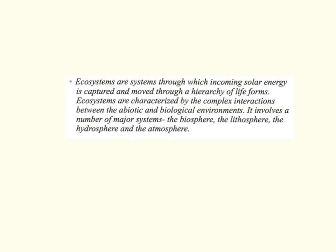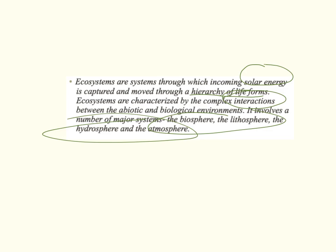There are many different definitions for ecosystems — there's not really a right or wrong one. This is a definition I've found which I really like, because it links very much with this dot point and with further dot points. It is a longer definition, but if you can know this definition for ecosystems, especially given the unit is ecosystems at risk, it can really set up a strong paragraph and a strong response. Ecosystems are systems through which incoming solar energy moves through a hierarchy of life forms and interactions — covering energy flows and the four spheres, which is also the biophysical interaction. I would encourage all students to, if not know it word for word, be able to very succinctly summarise it.